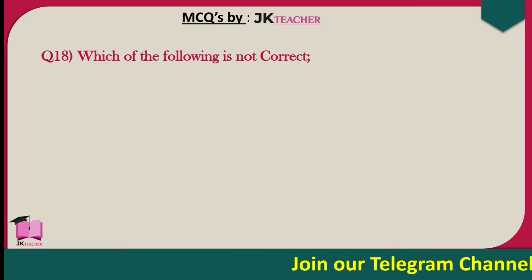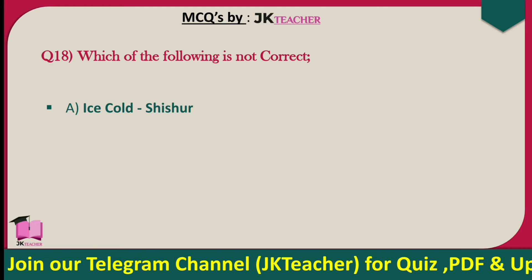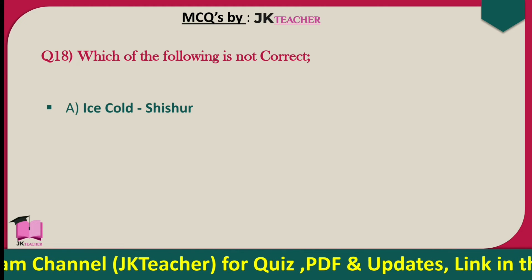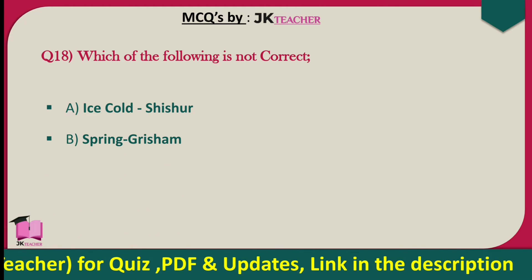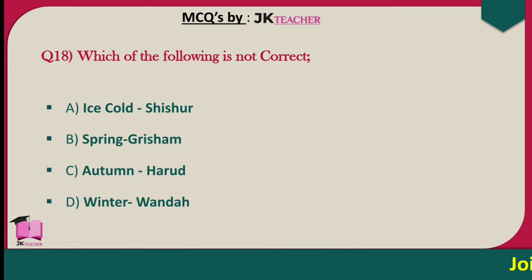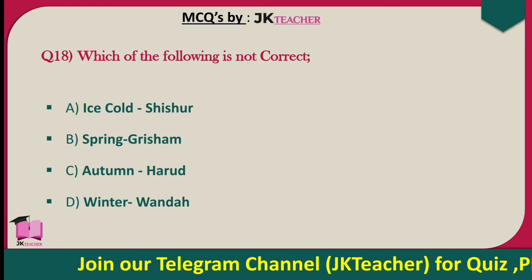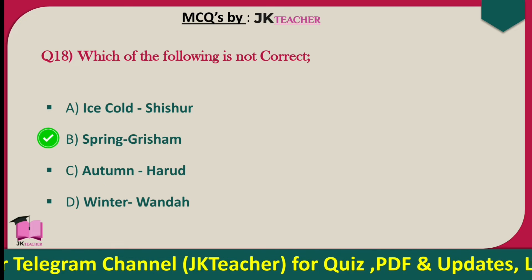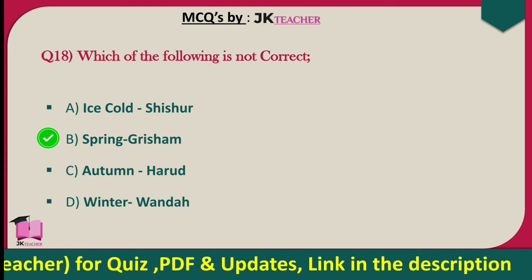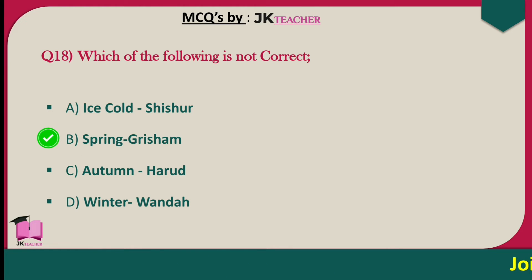Which of the following season pairings is not correct? Ice cold is Shishur, spring is Grisham — that is incorrect. Spring doesn't mean Grisham; spring means Sonth. Grisham refers to summer season, not spring. The right answer is option B — spring is incorrectly paired with Grisham.